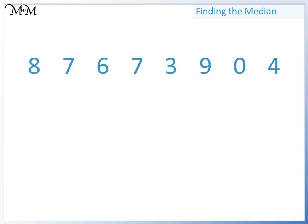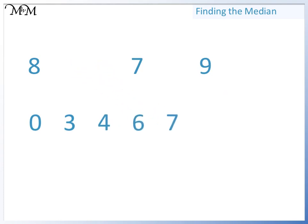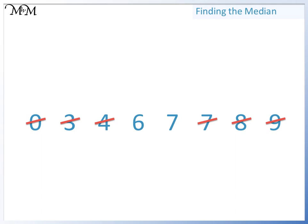To find the median, we begin by putting the numbers in order. We then cross off the numbers on each side until we reach the middle. There are two numbers in the centre.